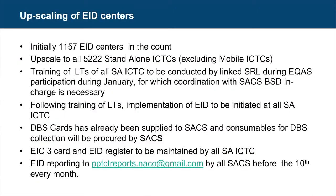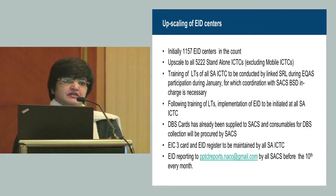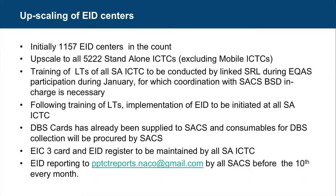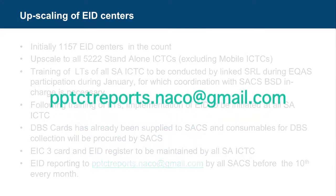There are two documentation records in ICTCs: the EIC3 card, which is an individual card for a baby, and an EIC3 register. These will be printed by the SACs and need to be maintained at all ICTCs. The EIC3 soft copy will be sent by the ICTCs to the states, and the state will compile it before the 10th of the month and send it to NACO at the email ID ppcityreports.naco@gmail.com.